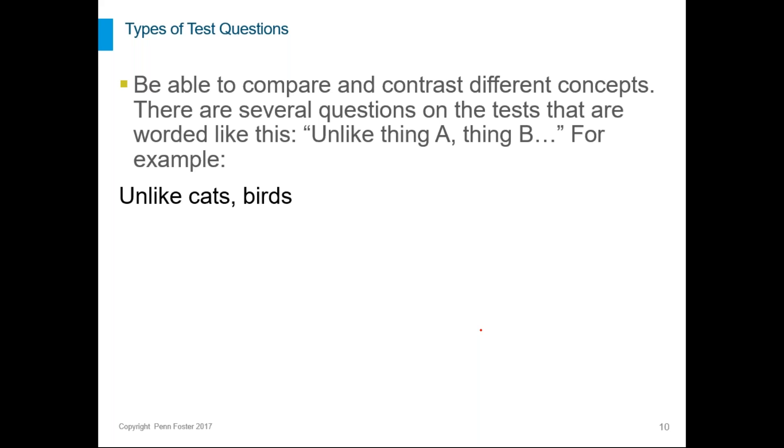Now another really kind of weird thing about this class is there's a lot of this type of question where you have to compare or contrast different concepts from your lesson. So you're going to see several questions on the test that are worded like this: Unlike thing A, thing B, and then you finish the sentence. So it might say unlike cats, birds, and you've got to figure out what the answer is out of your choices. So there's two things to realize. You're finishing the sentence. So thing B dot dot dot and you're filling in what's the dot dot dot. So whatever answer you pick it has to be true about thing B because that's the sentence. Thing B does this. But it also says unlike thing A, thing B does this. So you're looking for something that is true about thing B but it's not true about thing A.